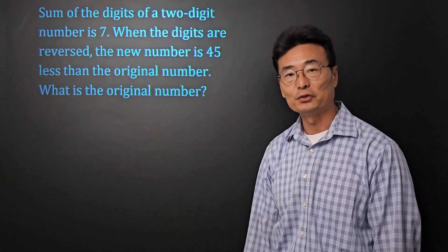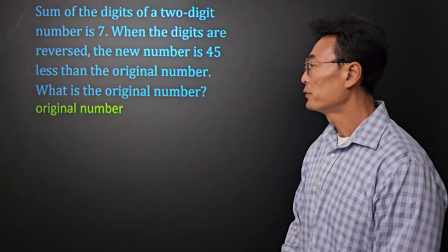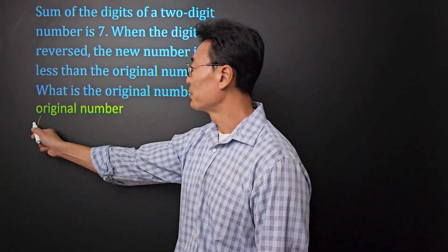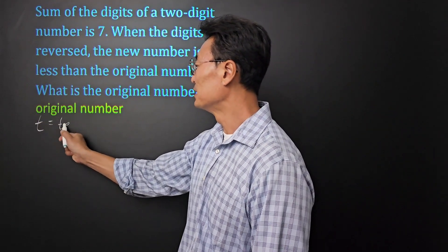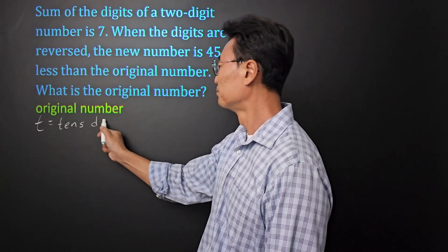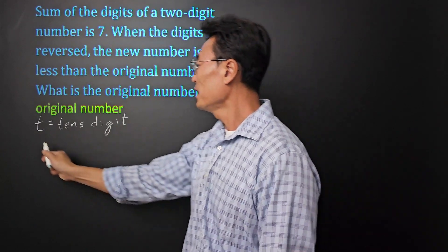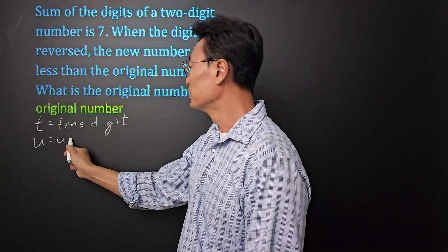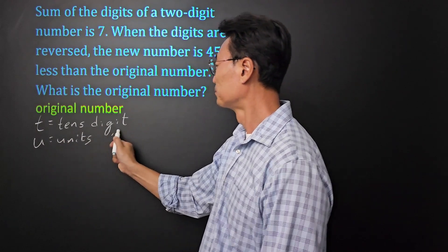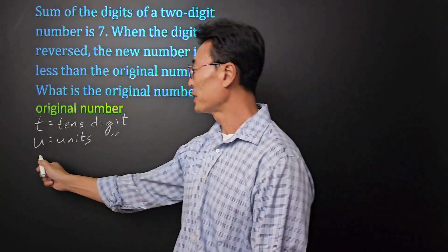For the original number, what we want to do is let t be the tens digit and we'll let u be the units digit. Then the number that we have will be 10t plus u.